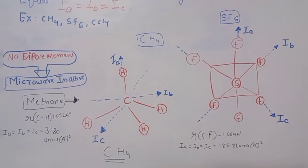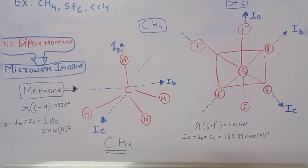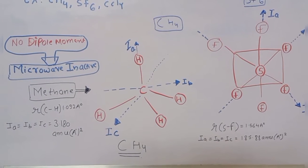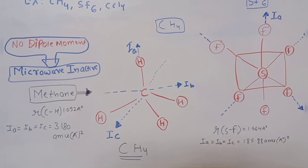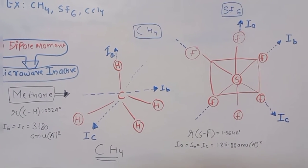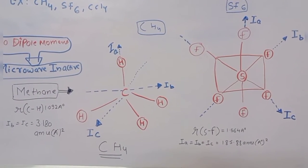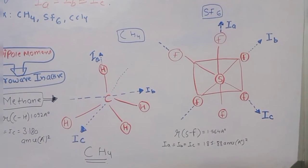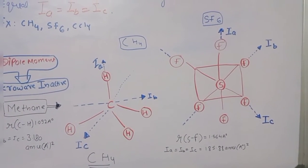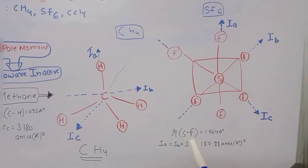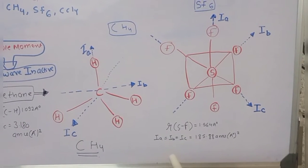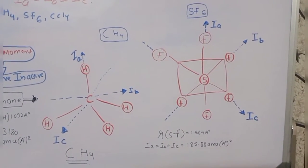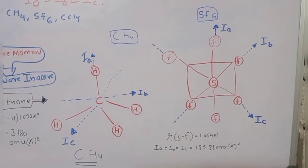For methane (CH4), r(C–H) = 1.092 Å and Ia = Ib = Ic = 3.180 amu·Å². Since all moments of inertia are equal and there is no dipole moment, CH4 is microwave inactive. For SF6, r(S–F) = 1.564 Å and Ia = Ib = Ic = 185.88 amu·Å². SF6 has an octahedral shape, no dipole moment, and is also microwave inactive.